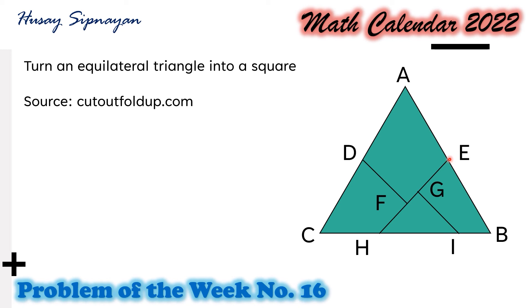And the tricky part here is to locate points H and I so that HI will be half as long as the side of that square that may be formed.